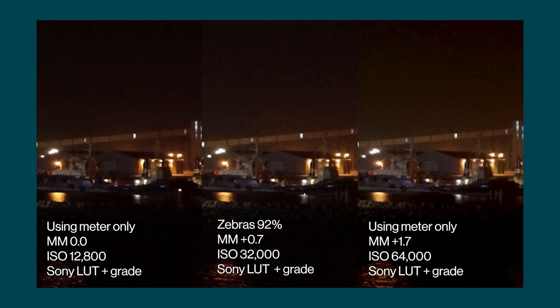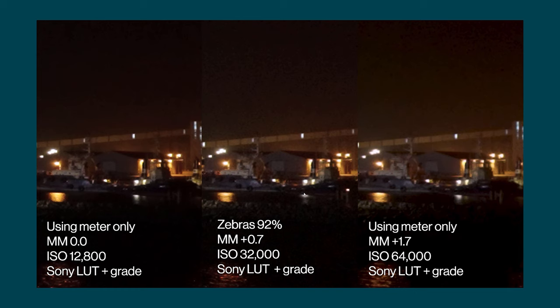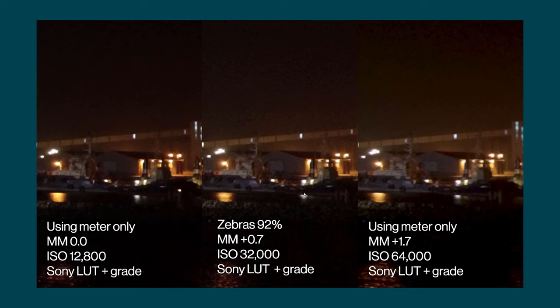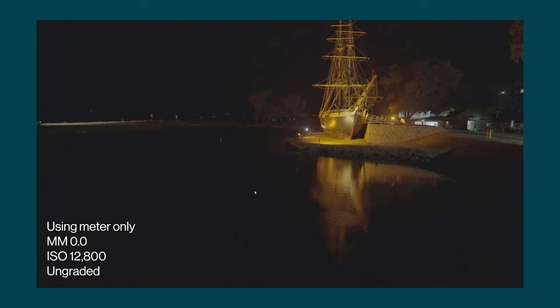I've done a few side-by-sides so you can see the comparisons. On the left we've got ISO 12,800 which is the second base ISO — this has the lowest noise. In the middle we've got zebra set to 92 and overexposed by plus 0.7, and on the right overexposed by plus 1.7. To my eyes the worst example is the middle example where we've only overexposed by plus 0.7. Notice on the right hand version where we've overexposed by plus 1.7 — even though we've had to boost the ISO again — I think that footage looks a bit better than the middle footage, though it doesn't look quite as noise free as the left hand side. I also shot some additional test footage of this ship.